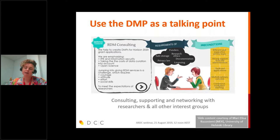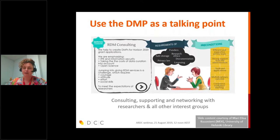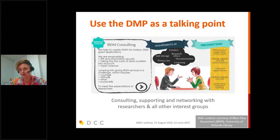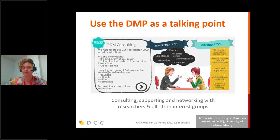The data management plan can also be a good talking point. This example from Maria-Elisa Kuznoyemi at the University of Helsinki shows an RDM consulting service that brings together different stakeholders from institutional services to help research teams think about the best ways to manage their data. It's a way to raise awareness of different expectations a researcher might have to meet from their funder or publisher, and to help them understand areas like research ethics and point them to relevant services. That discussion can be a really good way of fleshing out the DMP.